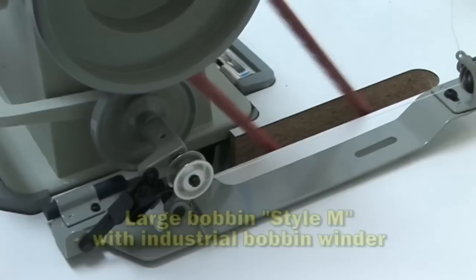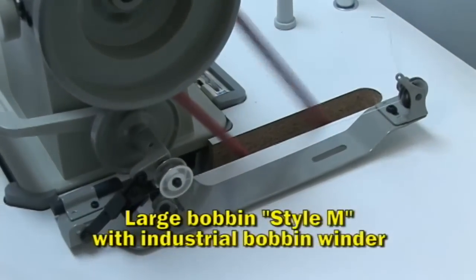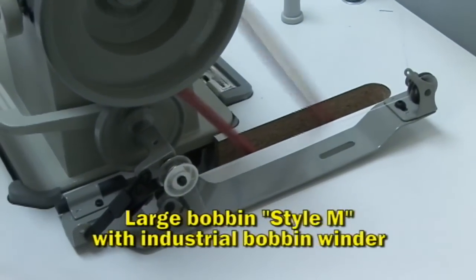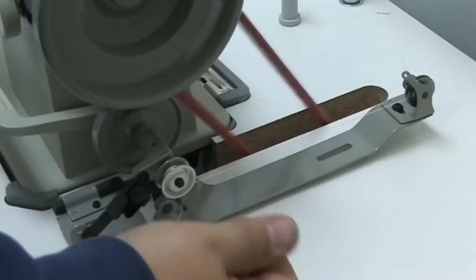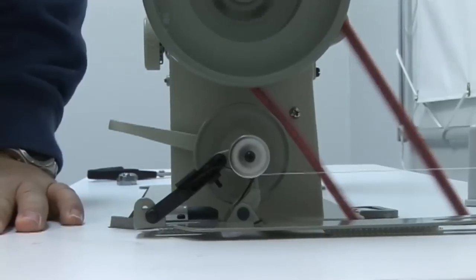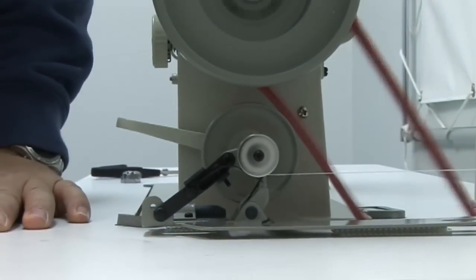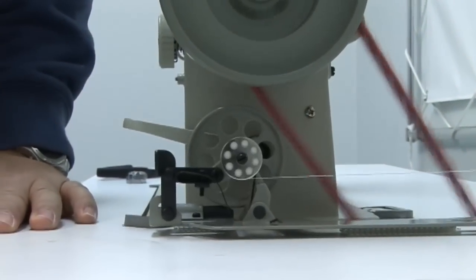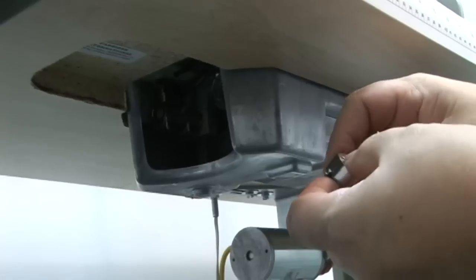This Sailrite 111 comes with an industrial size bobbin and bobbin winder. You can wind bobbins while you're sewing or lift your foot and wind bobbins without sewing. After the bobbin is full, place it in the bobbin case.